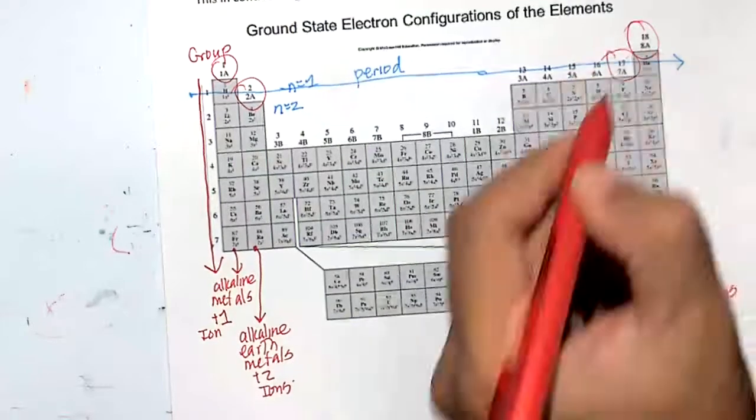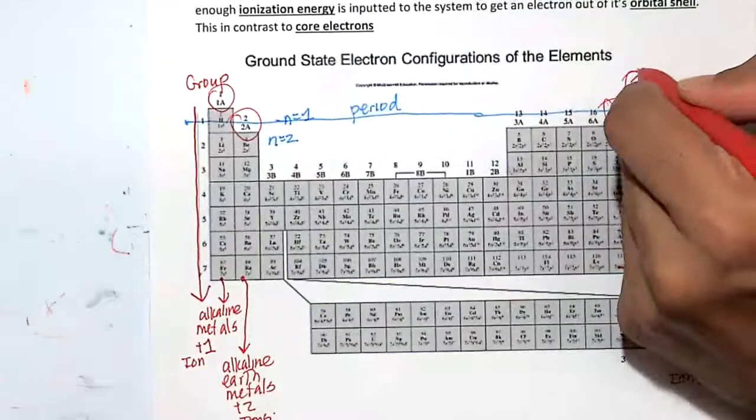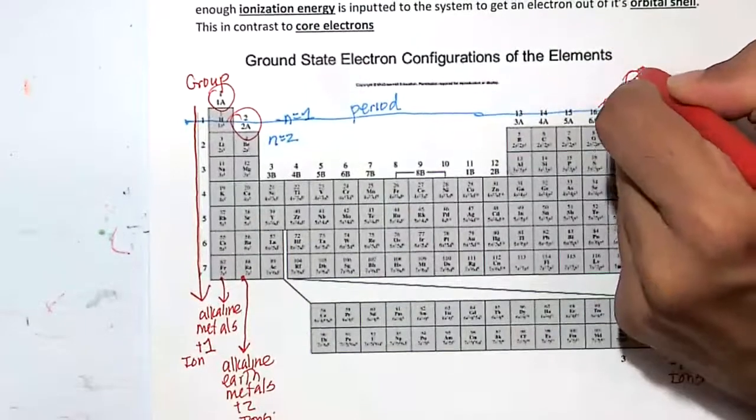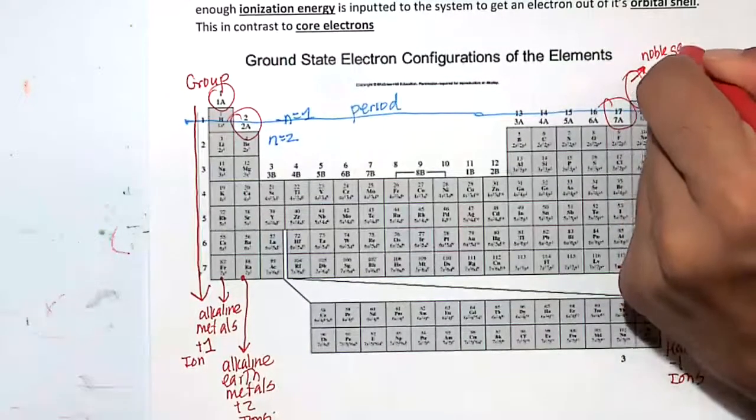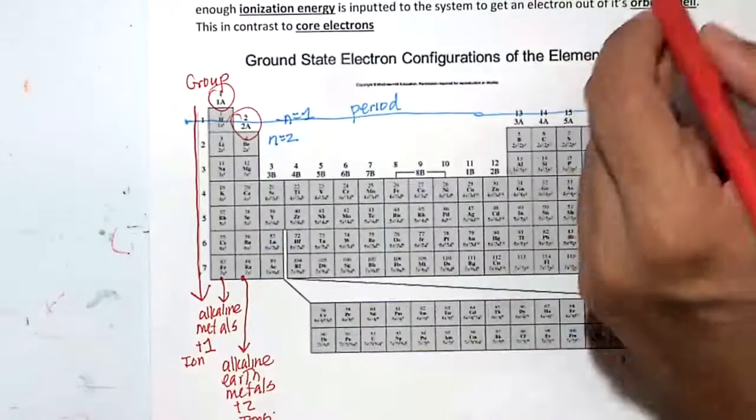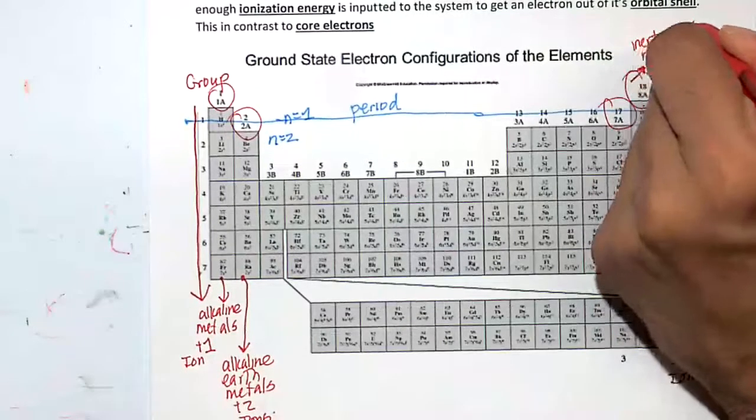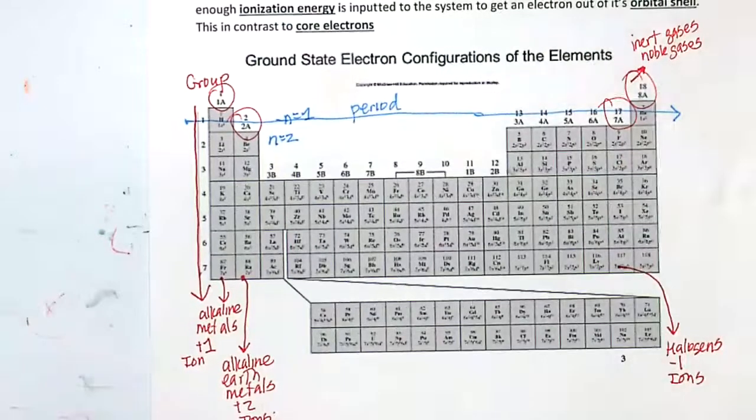Finally, these are group 18 or 8A, are called noble gases. You may also hear of it being called inert gases, so they will not form any ions.